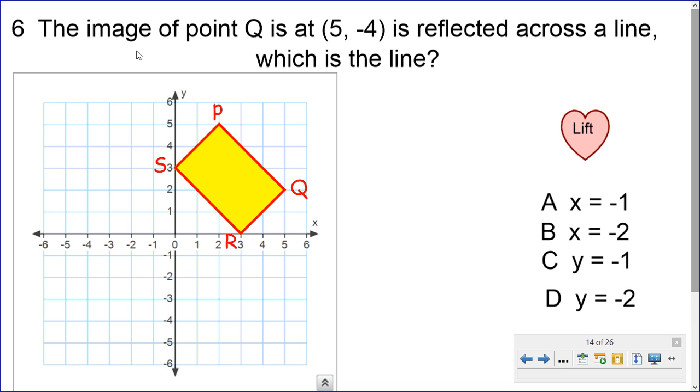All right, we have the image of point Q is 5, negative 4, is reflected across a line. Which is the line? Well, here's point Q, and it is 5, 2. And it said the image of point Q, which is the other one, other Q, is going to be 5, negative 4, and 5, negative 4 is way down here.